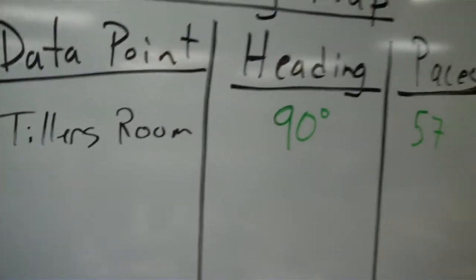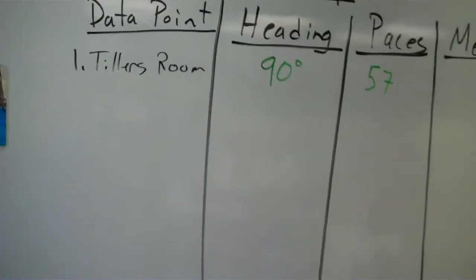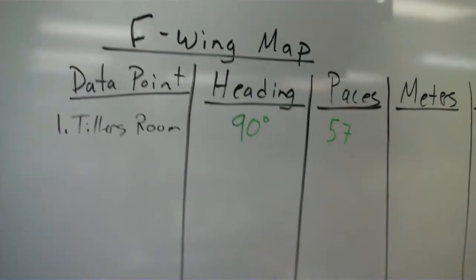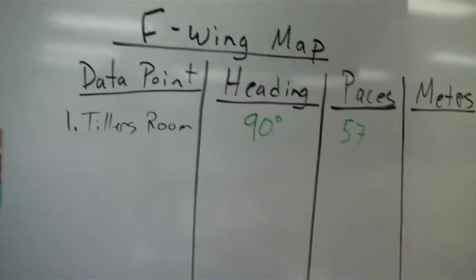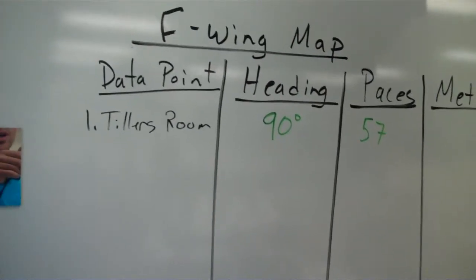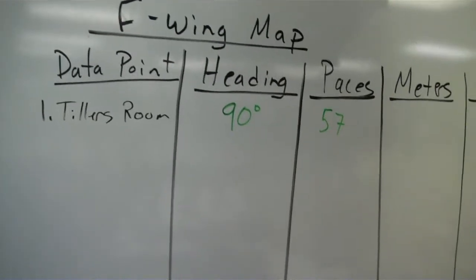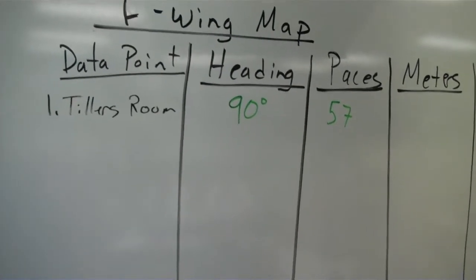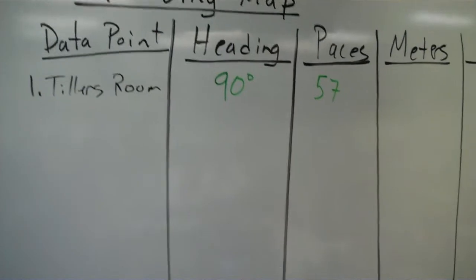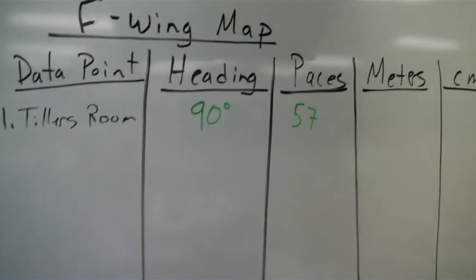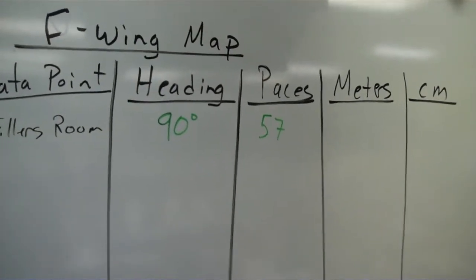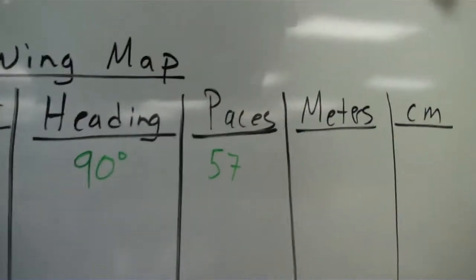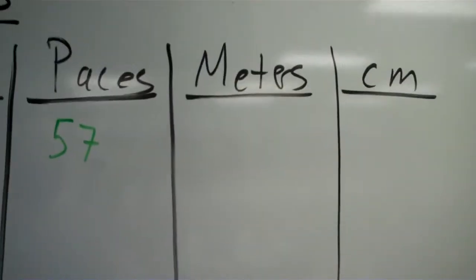We just returned from the hallways — we have our data points. We measured headings and lengths in paces. The data points will help us when we start to make our map; they'll give us a frame of reference. For example, we'll use a heading of 90 degrees and a pace count of 57. We want to convert paces to the actual number of meters the hallway is — and this is a real-life number.